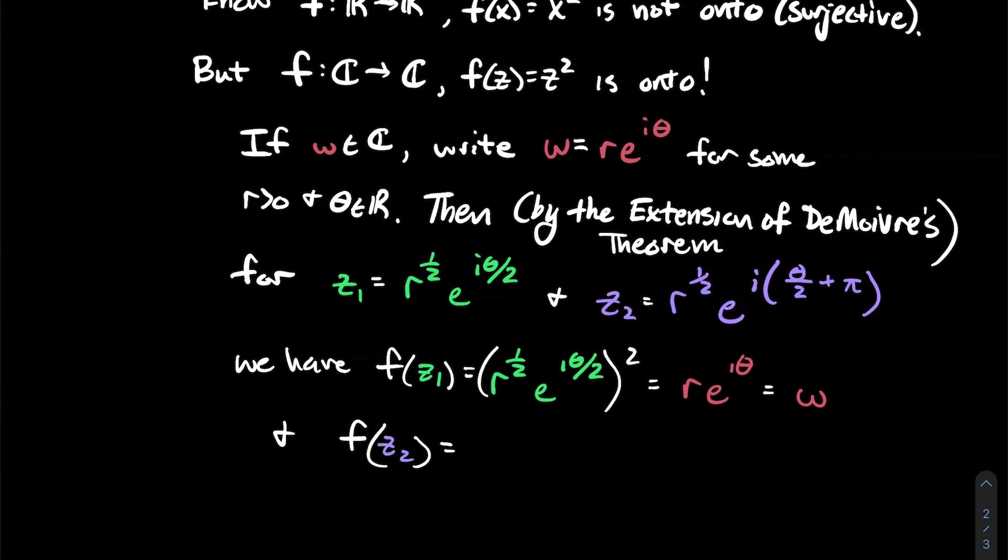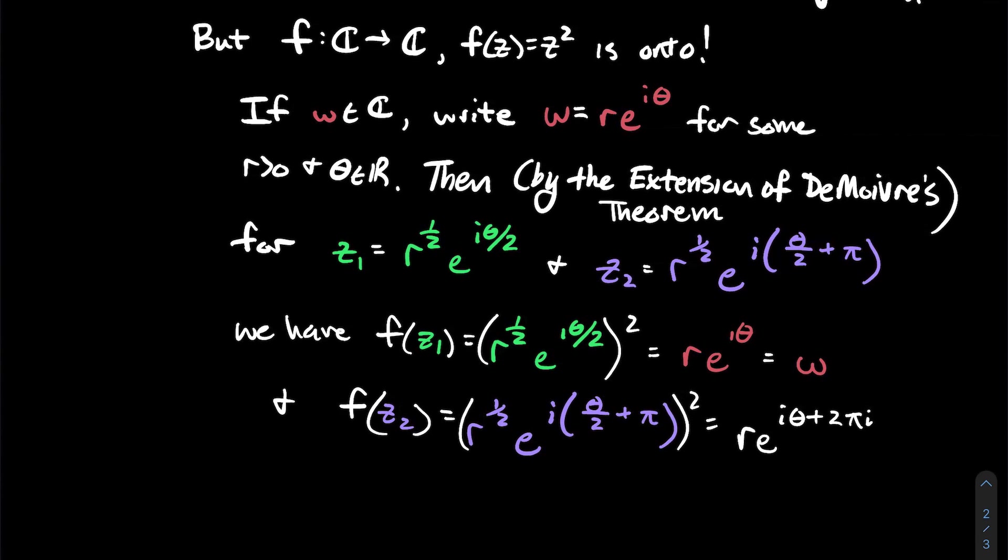But just for fun, I've got z2 also. And when I square z2, remember, that's what f does. When I square z2, I get r e to the i theta plus 2 pi i. So just be careful. You know, you multiply that two through the exponent, but then you also have to distribute the i through. Some silly algebra mistakes can happen in a complex class.